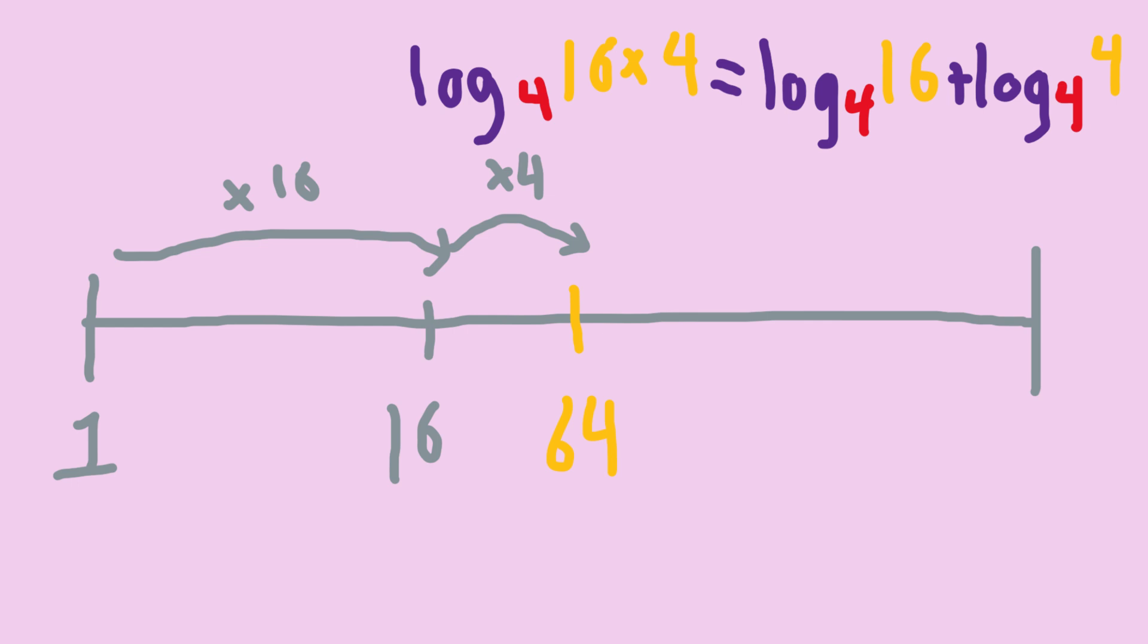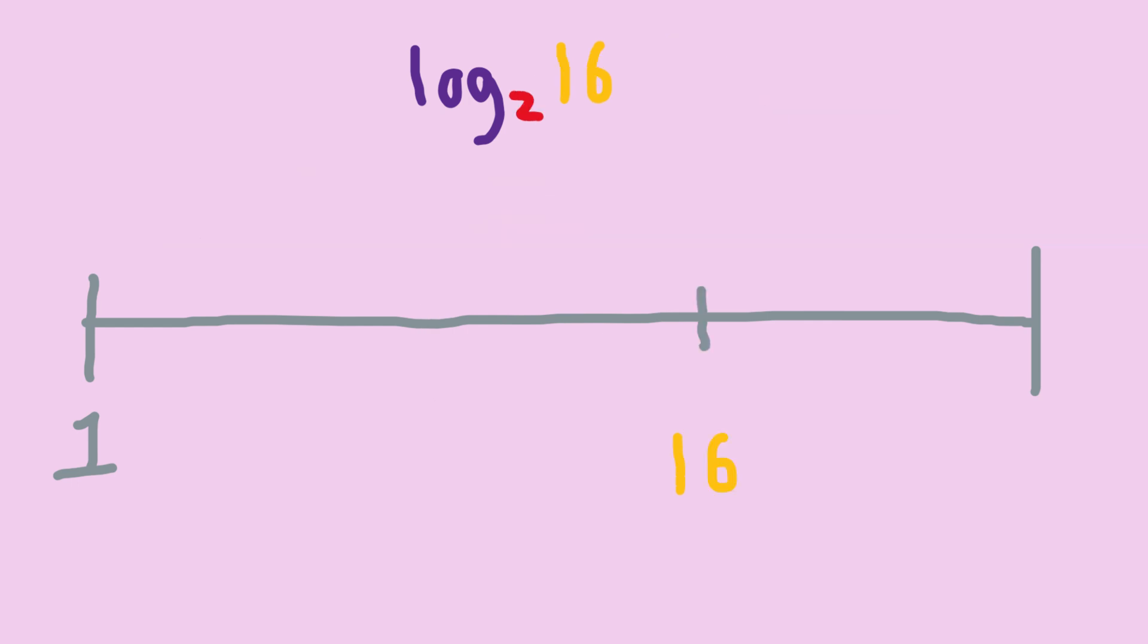We sort of translate a multiplication into addition. Take log base 2 of 16. We can also think of 16 as 4 squared, or 2 jumps of size 4, making the total number of steps 2 times the amount of steps it takes to move by 4 when counting in a times 2 sort of way. We turn exponentiation into multiplication.